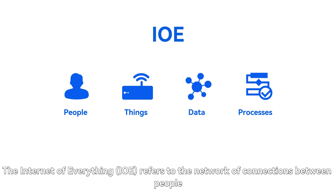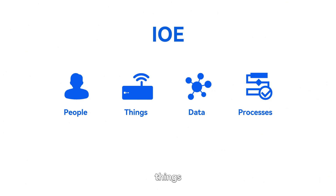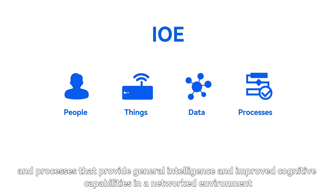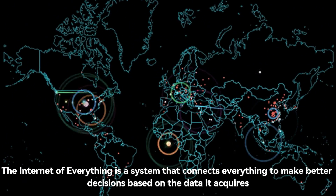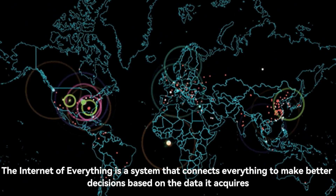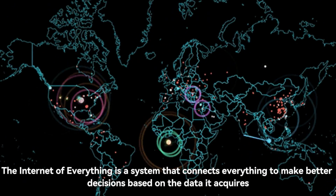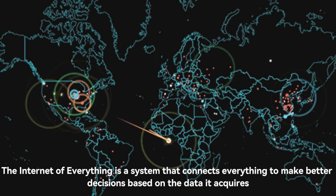The Internet of Everything, IOE, refers to the network of connections between people, things, data, and processes that provide general intelligence and improved cognitive capabilities in a networked environment. The Internet of Everything is a system that connects everything to make better decisions based on the data it acquires.